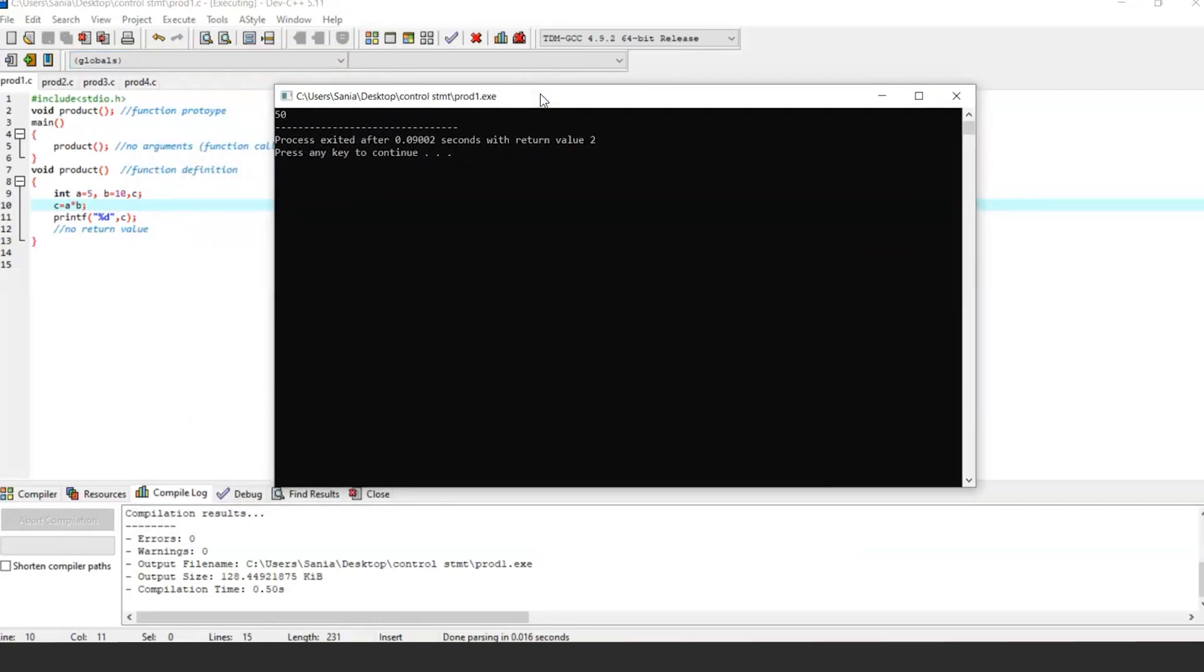According to the values of a variable, 5 and 10, we got an output: 5 into 10 is equal to 50.